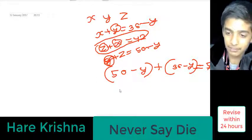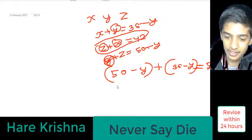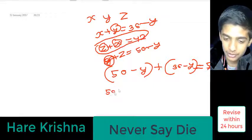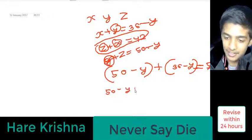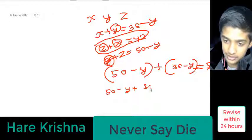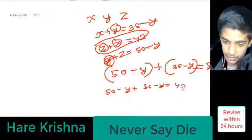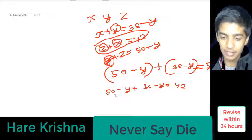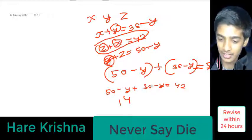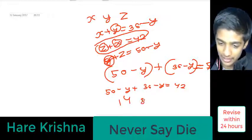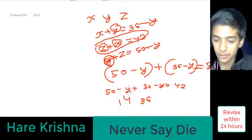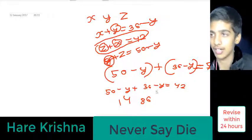So we will open the brackets and it will become 50 minus y plus 36 minus y is equal to 42. Then we will add 50 and 36. Then we will do minus y minus y.